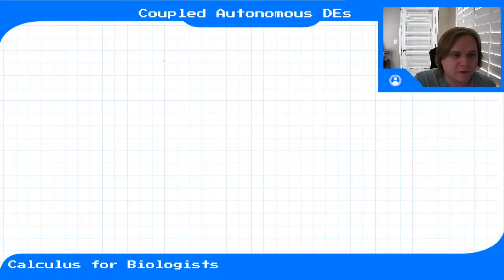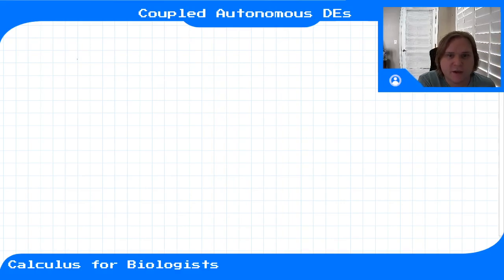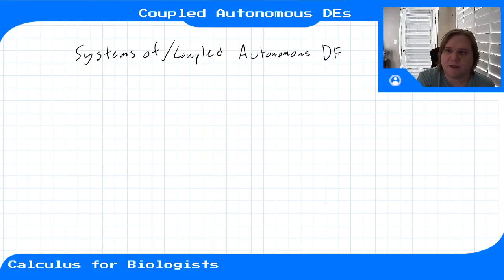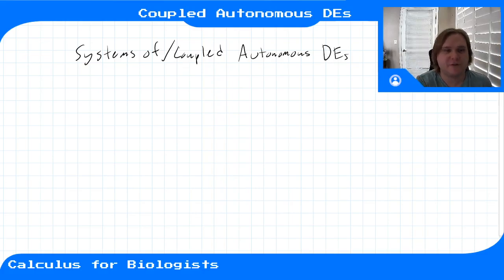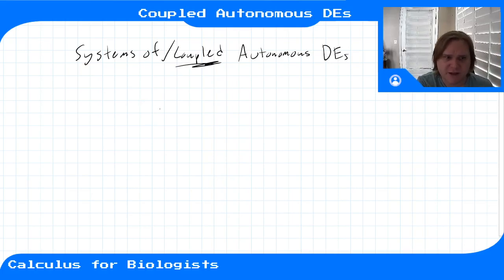Now that we've learned how to deal with autonomous differential equations, we can arrive at the final topic of this course — one of my favorite topics — which is systems of autonomous differential equations. Specifically, we'll be dealing with coupled autonomous differential equations, focusing on systems of two equations, though you can have a system of any number.